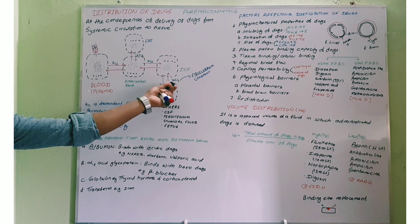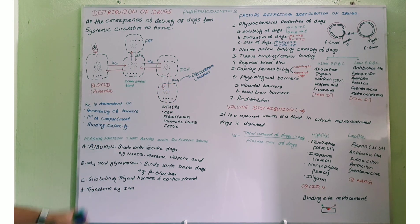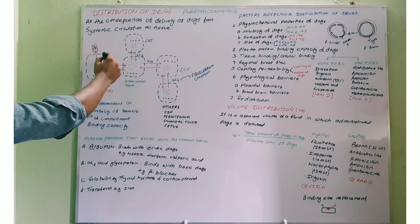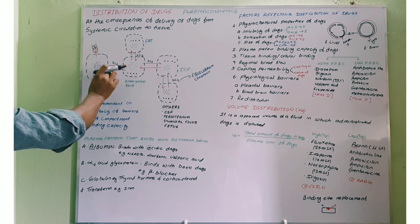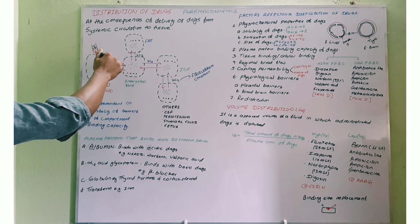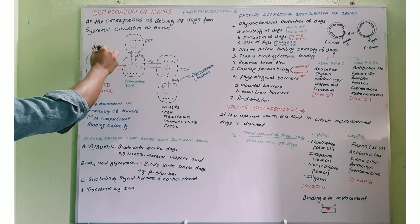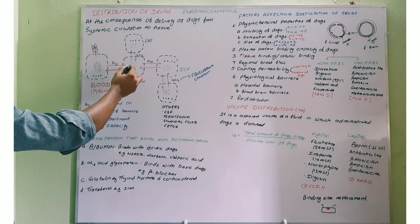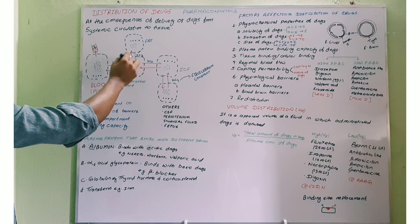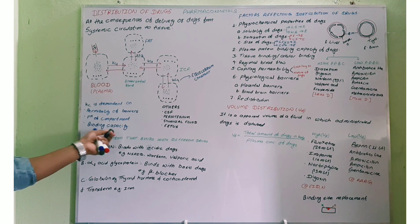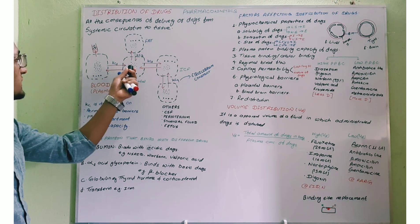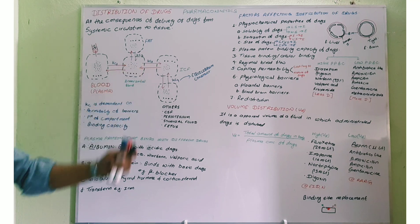This equilibrium constant depends on the permeability of the barrier — that is, permeability between one compartment and another, the permeability of the membrane between compartments — the pH of the respective compartment, and the binding capacity of the plasma protein of that compartment.